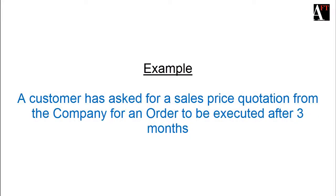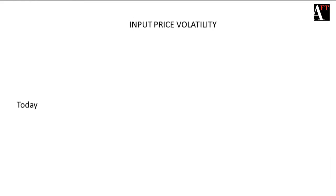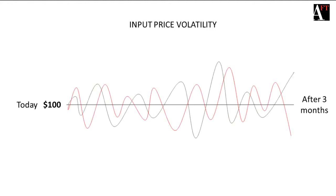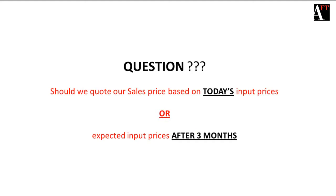For example, you have got an order and you need to execute it after 3 months. Ideally you would want to buy the input raw material after 3 months at an uncertain price. However, you need to quote your selling price today to your customer or client. So you are facing a serious uncertainty because if you quote a price today keeping in mind today's crude oil price and your input price,